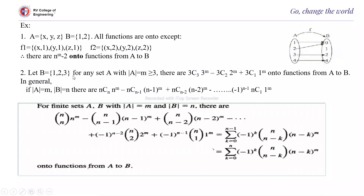Suppose B = {1, 2, 3} for any set A with |A| = m ≥ 3. Then there are C(3,3)·3^m − C(3,2)·2^m + C(3,1)·1^m onto functions from A to B. In general, if |A| = m and |B| = n, then the number of onto functions is: C(n,n)·n^m − C(n,n−1)·(n−1)^m + C(n,n−2)·(n−2)^m − ... + (−1)^(n−1)·C(n,1)·1^m.